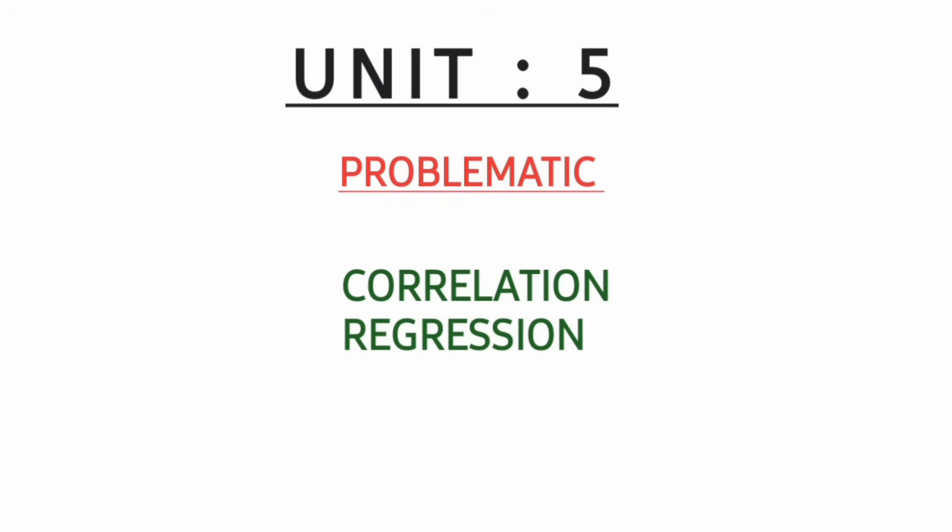Fifth unit compulsory: out of regression or correlation, or sometimes both problematic methods they will ask for eight marks. Out of these two, definitely one problematic method you will get for eight marks. So prepare these two methods.